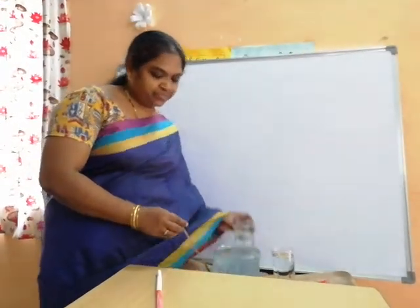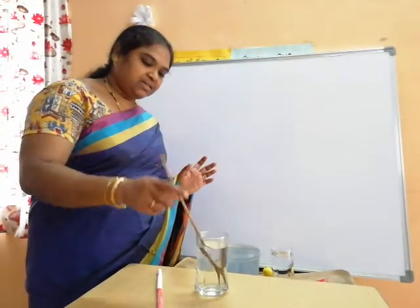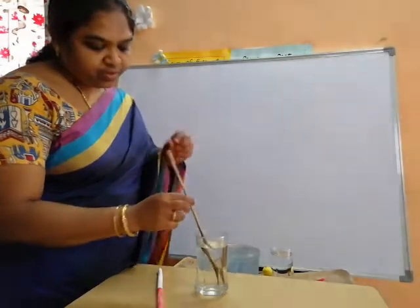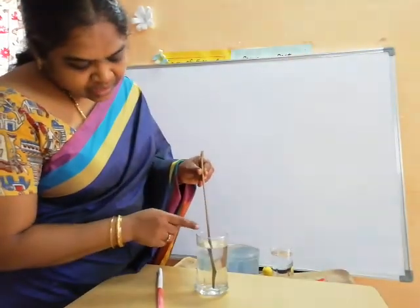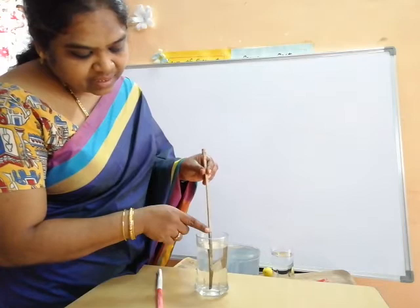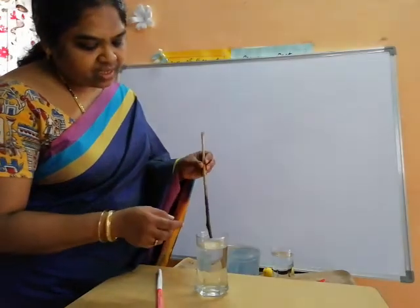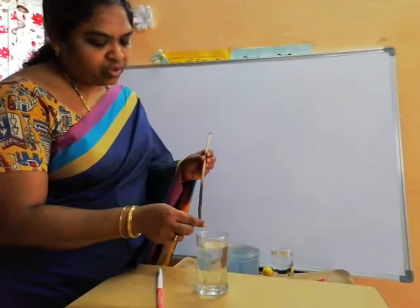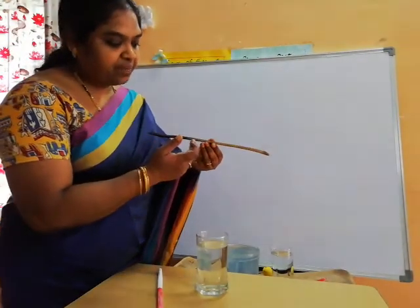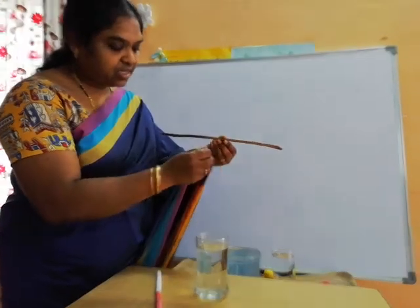I took a glass of water and kept this stick inside the water. Now, when you keenly observe, some part of the stick is becoming wet. So, after removing the stick, the wet part you try to fold towards the left side and the dry part towards the right side. Clear children?